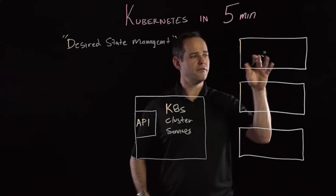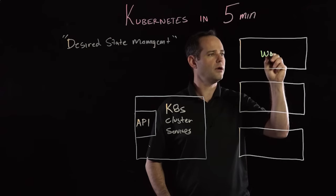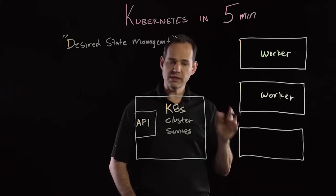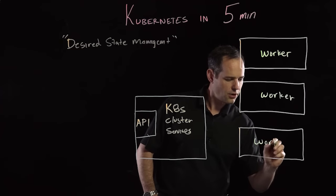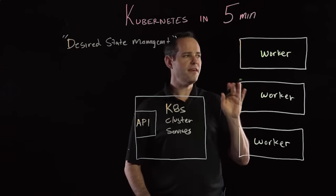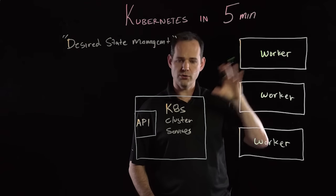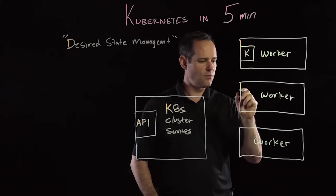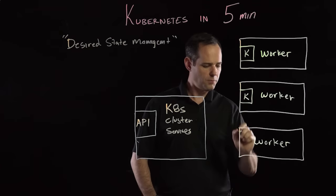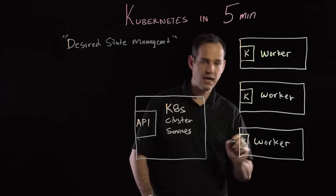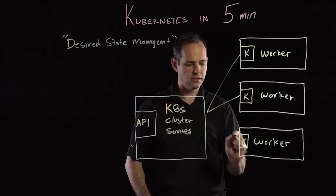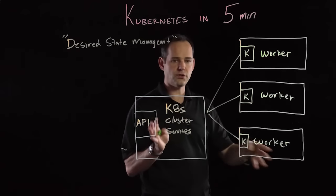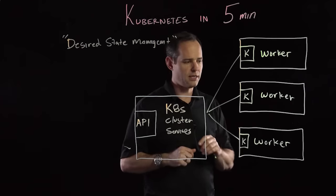The second building block of the system is this thing called a worker. A worker is really just a container host. What's unique about a worker or the container host in a Kubernetes environment is that it does have this kubelet process that runs, which is responsible for communicating with the Kubernetes cluster services. So this whole thing — the cluster services and the workers themselves — that's what makes up this Kubernetes cluster.